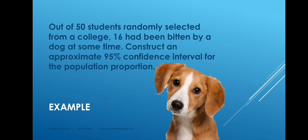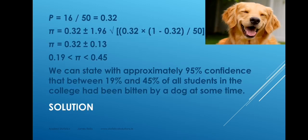Here's an example of estimating a population proportion. Out of 50 students randomly selected from a college, 16 had been bitten by a dog at some time. Construct an approximate 95% confidence interval for the population proportion — that is, the proportion of all students in the college who had been bitten by a dog. So we take our sample data: N equals 50, P equals 16 over 50, which is 0.32. So 32% of the students in the sample had been bitten.